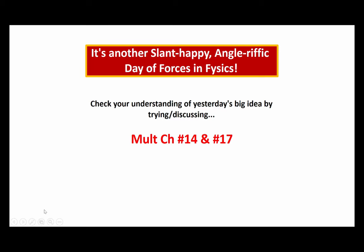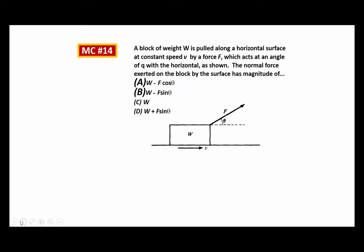We're going to go through these and see how you can reason through them together. Number 14: we've got a block of weight W pulled along a horizontal surface at a constant speed. So I know it's not accelerating. There's our speed V, by a force F which acts at an angle of theta with the horizontal as shown. The normal force exerted on the block by the surface has a magnitude of...